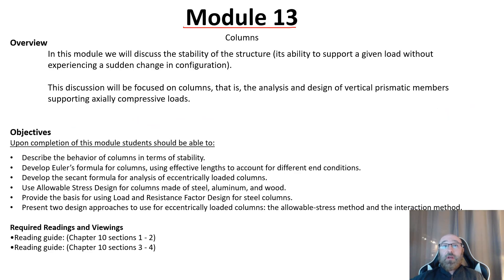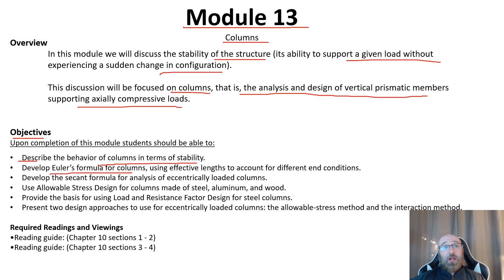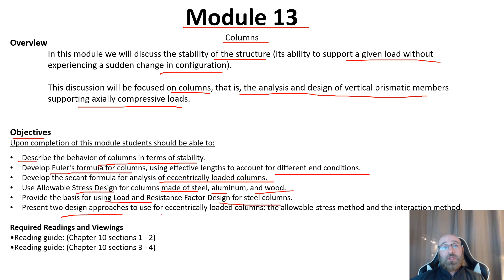As we begin module 13, we're taking a look at chapter 10 with the topic of columns. Within this module we'll discuss the stability of structures — the ability to support a given load without experiencing a sudden change in configuration — focusing on the analysis and design of vertical prismatic members supporting axial compressive loads. Module objectives include: describing column behavior in terms of stability, applying Euler's formula using effective lengths for different end conditions, developing the secant formula for eccentrically loaded columns, using allowable stress design for steel, aluminum, and wood columns, applying load resistance factor design for steel columns, and presenting the allowable stress and interaction methods for eccentrically loaded columns.